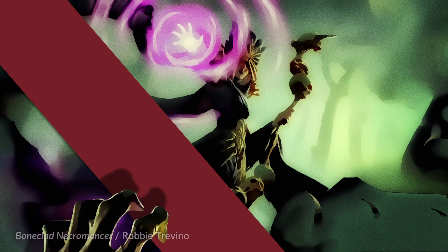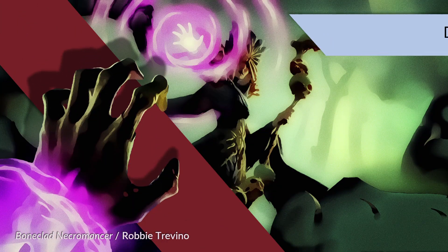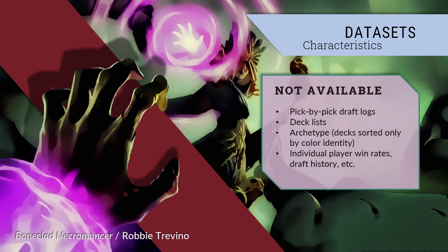What we do not have is a record of entire draft histories from pick 1 to pick 45, nor do we have deck lists. The only granularity associated with deck archetype derives from color identity. Thus, if a hypothetical environment had robust support for an aggressive blue tempo deck as well as a big blue control deck, both of these strategies would appear in the data as simply the mono blue deck. And of course, we do not have any data tied in any way, even anonymously, to individual players.